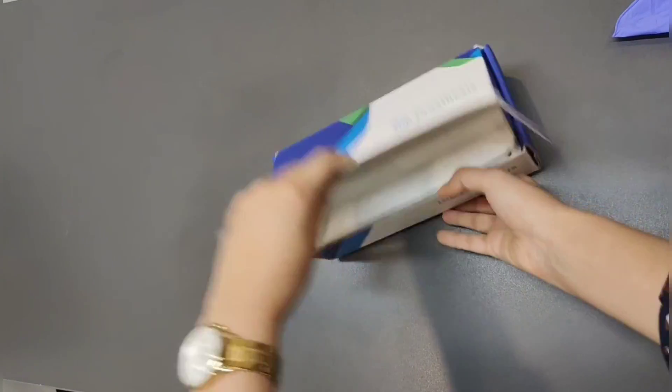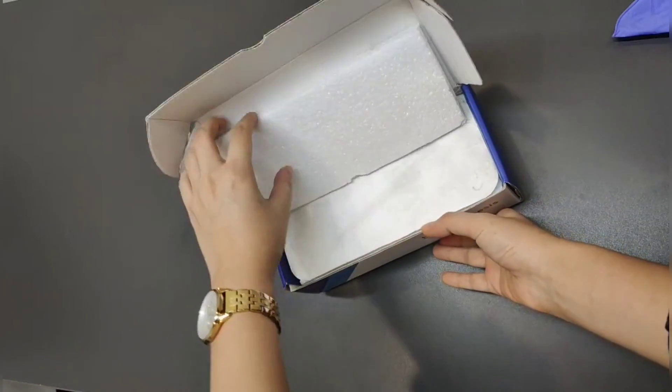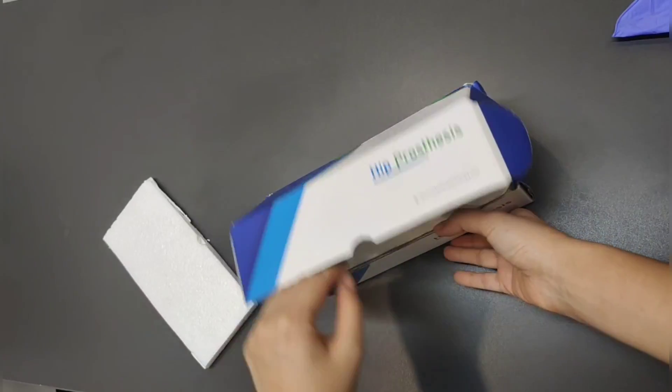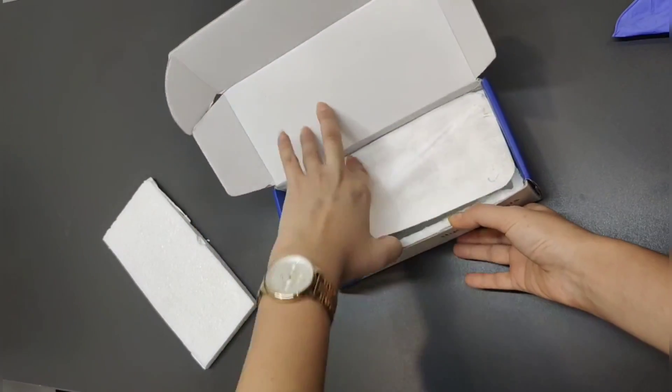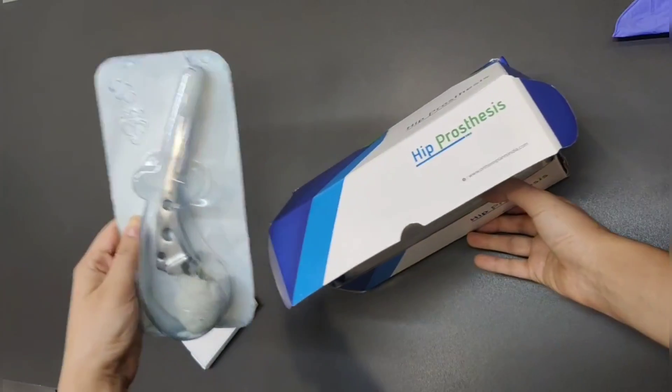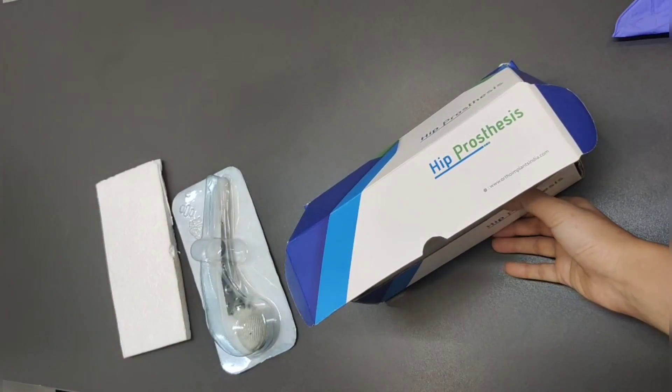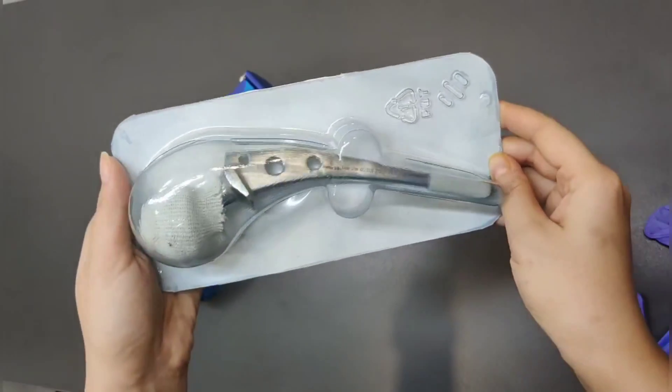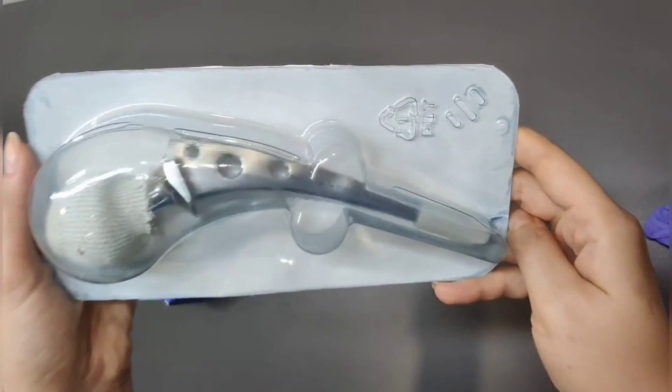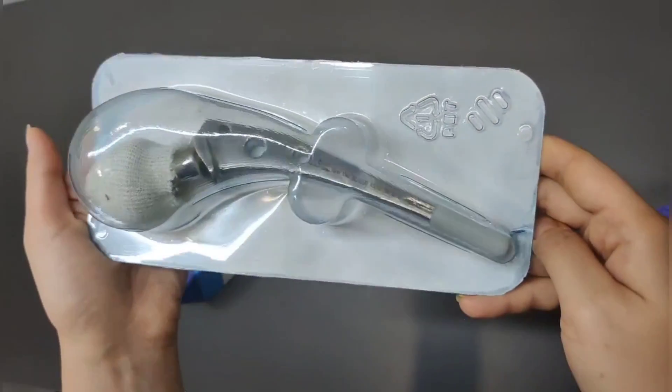The key advantage of the Zilmax Bipolar Hip Prosthesis is its ability to reduce acetabular destruction by preventing grinding of the prosthesis against it. As the patient walks, the prosthesis facilitates its own movement, minimizing damage to the acetabulum.